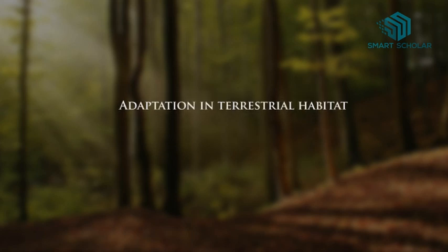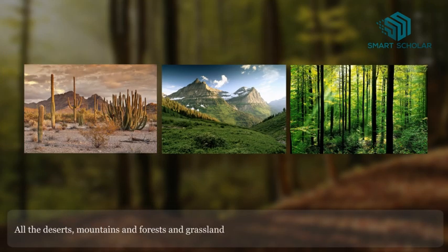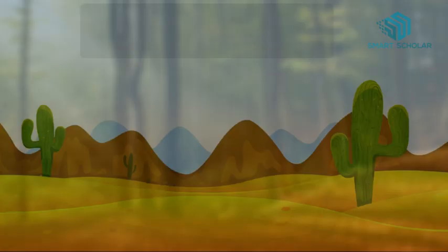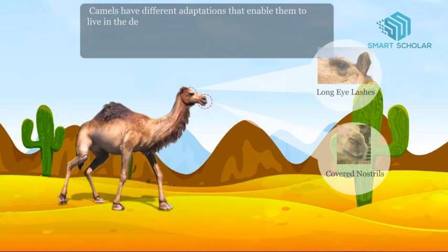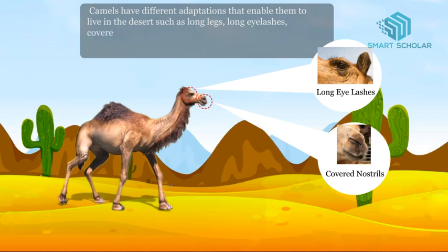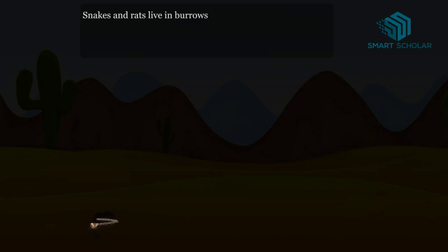Adaptation in Terrestrial Habitat. All the deserts, mountains, forests and grasslands are included under terrestrial habitats. Camels have different adaptations that enable them to live in the desert, such as long legs, long eyelashes, covered nostrils, special fat cells and modified cells in the stomach. Snakes and rats live in burrows and come out only during the night when it's cool.